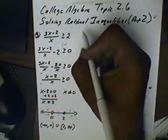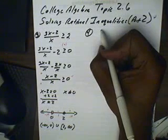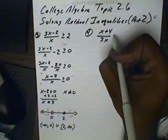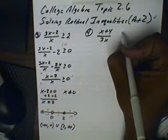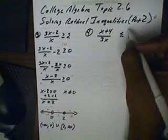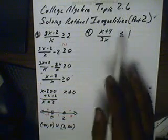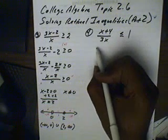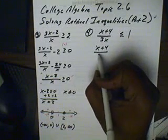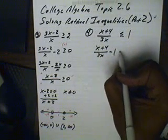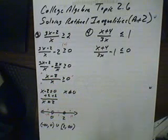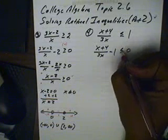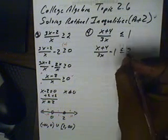Let's try one more problem. Number 4: we have (x + 4) / (3x) ≤ 1. To start off, we make sure everything is set against 0, so we move the 1 to the other side: (x + 4)/(3x) − 1 ≤ 0. Since this is less than or equal to 0, we're now looking for negative solutions.